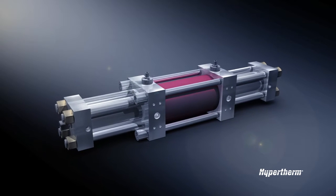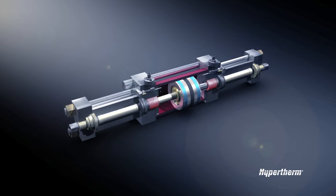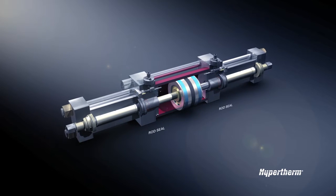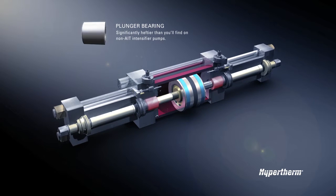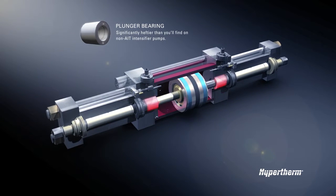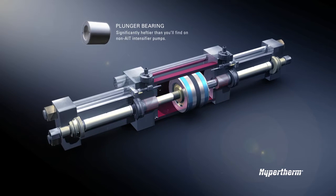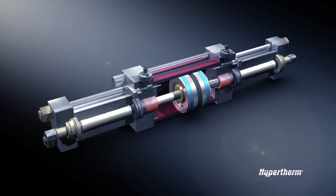To keep everything running smoothly, AIT uses long-lasting plunger bearings and hydraulic rod seals. You'll notice right away that the bearings are significantly heftier than you'll find on non-AIT intensifier pumps. The longer design results in longer plunger engagement, which improves plunger alignment. The bearings are also a lot easier to access thanks to the design of the seal housing.